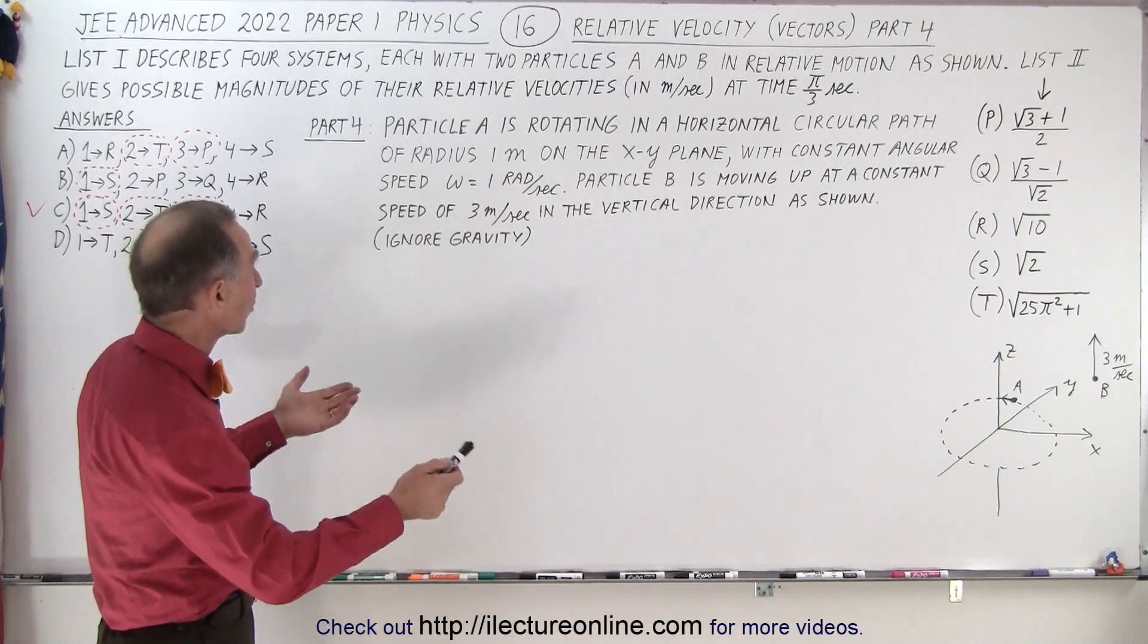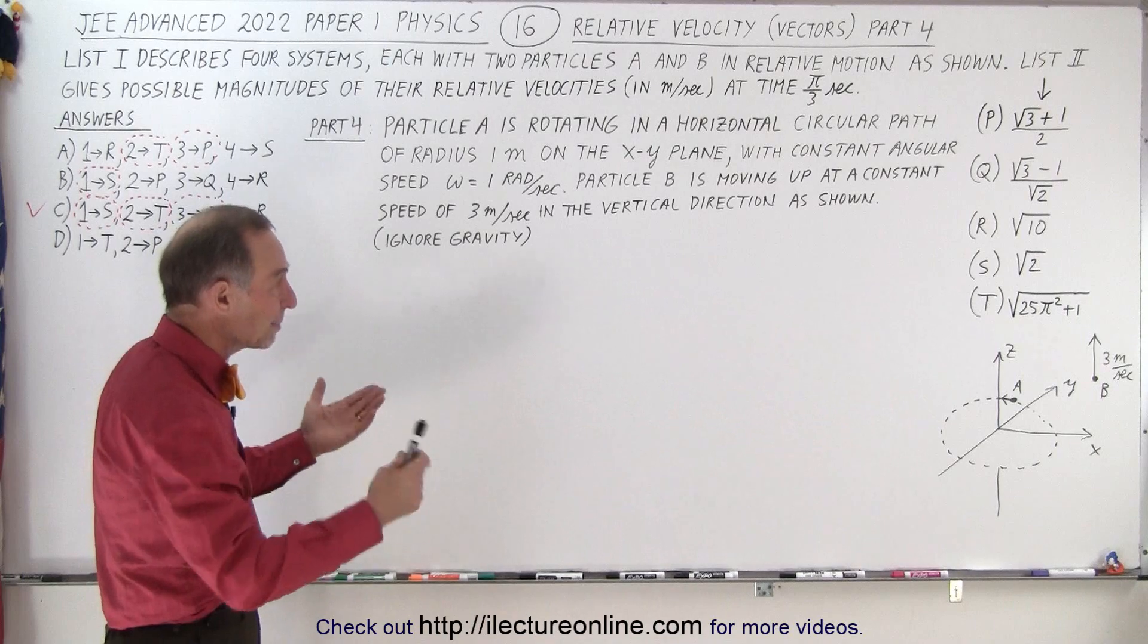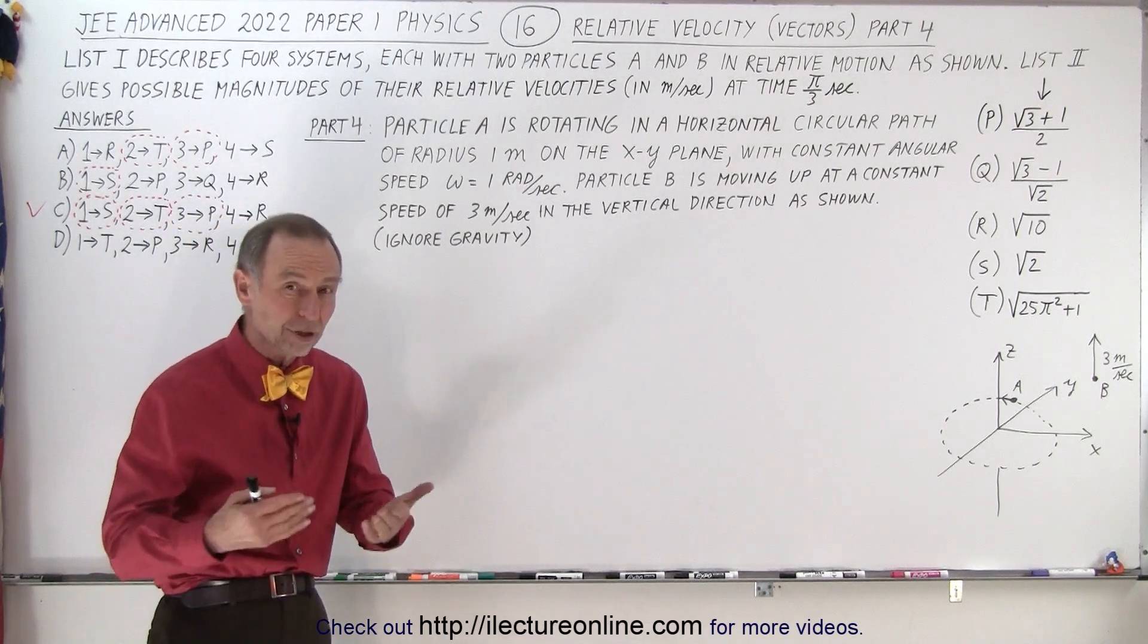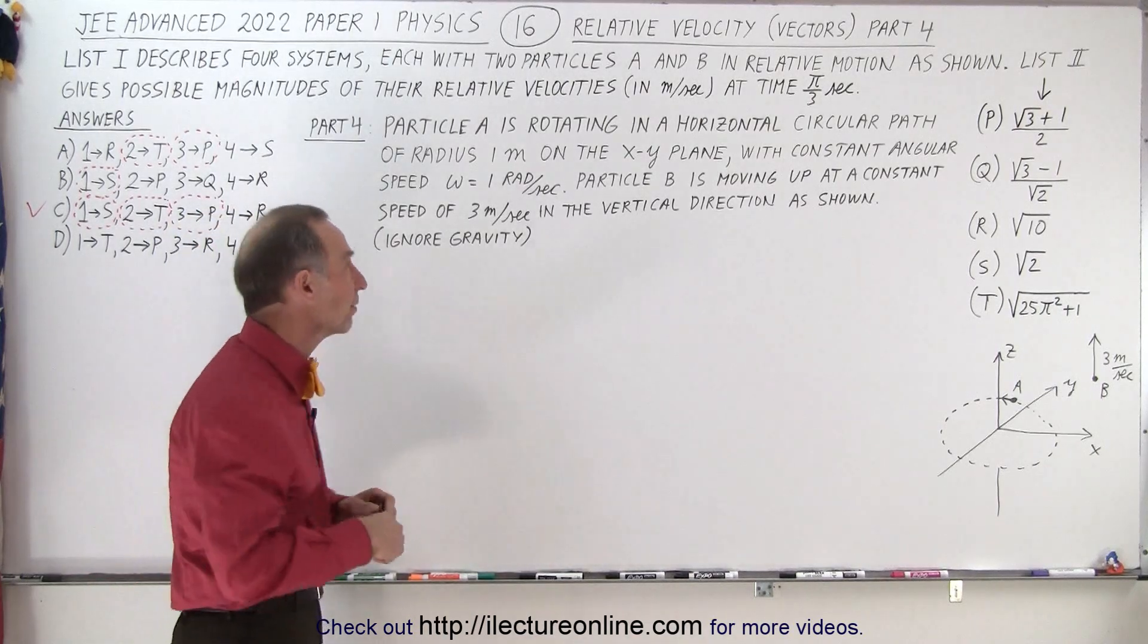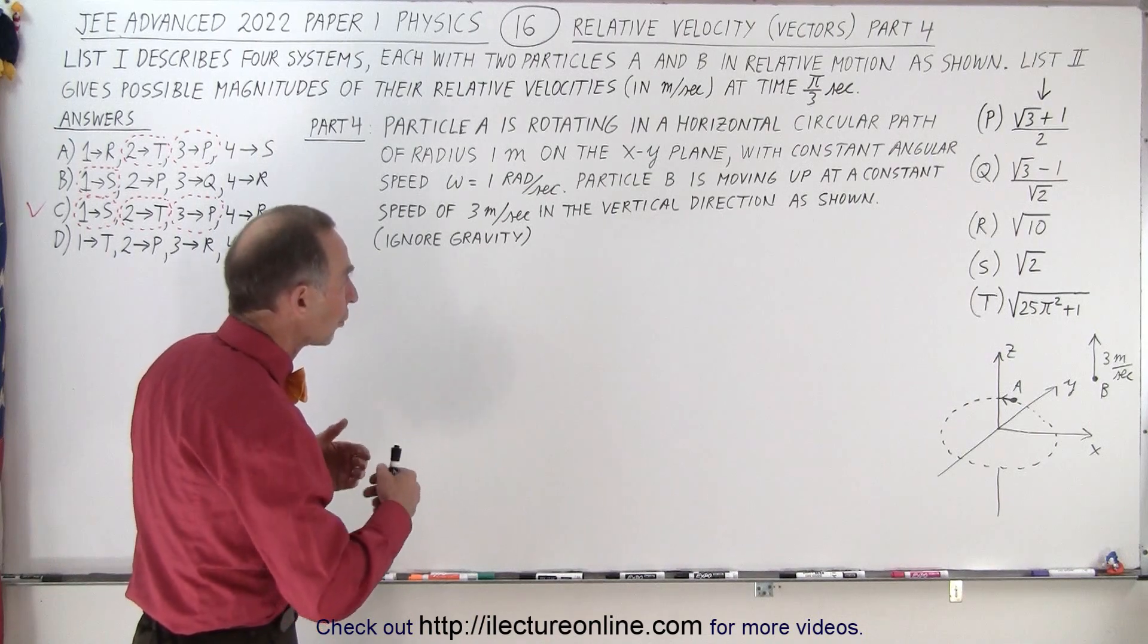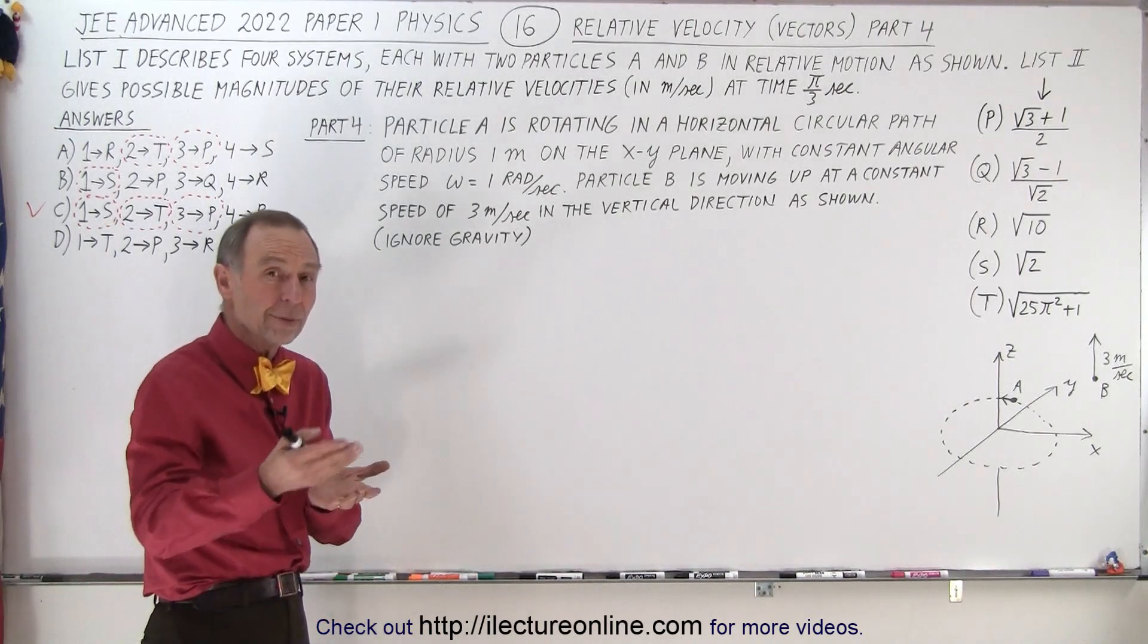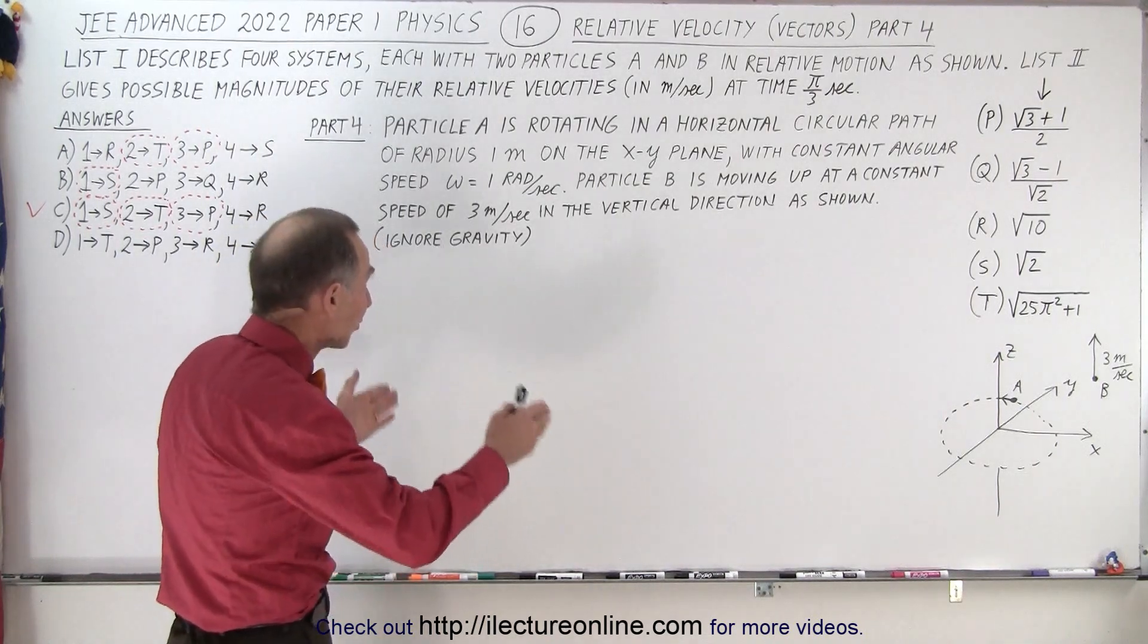So what we're dealing with here is two particles, A and B, and we're trying to find the relative velocity, the magnitude of the relative velocities. And so we're going to subtract the velocity of one from the velocity of the other and take the absolute value of that.